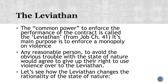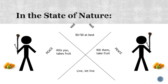It seems like any reasonable person, in order to avoid the obvious problems of the state of nature — a life that is solitary, poor, nasty, brutish, and short — would agree to give up their right to use violence and give it over to the Leviathan. They'll say: I'm going to renounce my right to use violence in service of my own goals, as long as everyone else does too and gives that right over to the Leviathan. That's what gives a government the legitimate monopoly on violence.